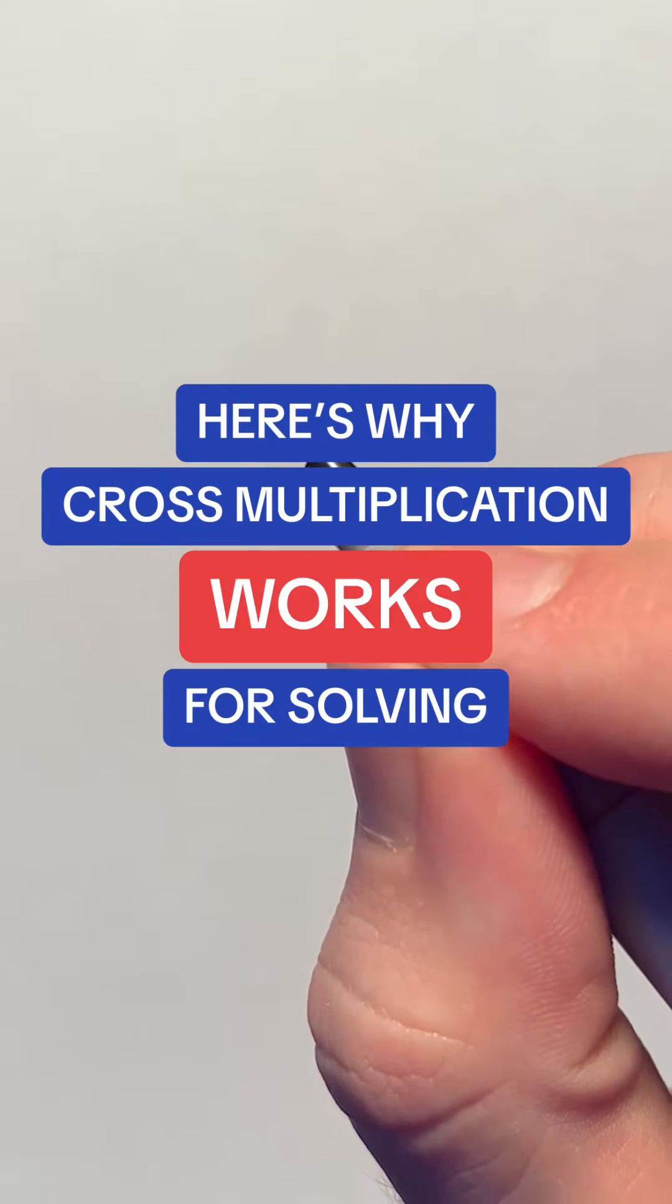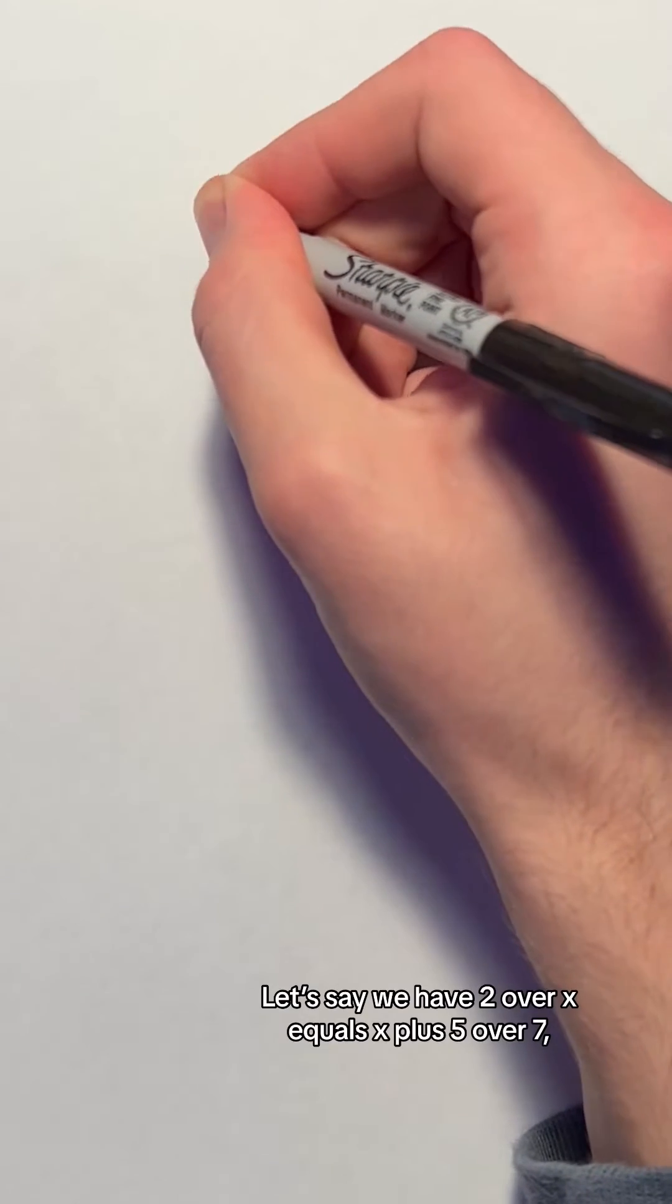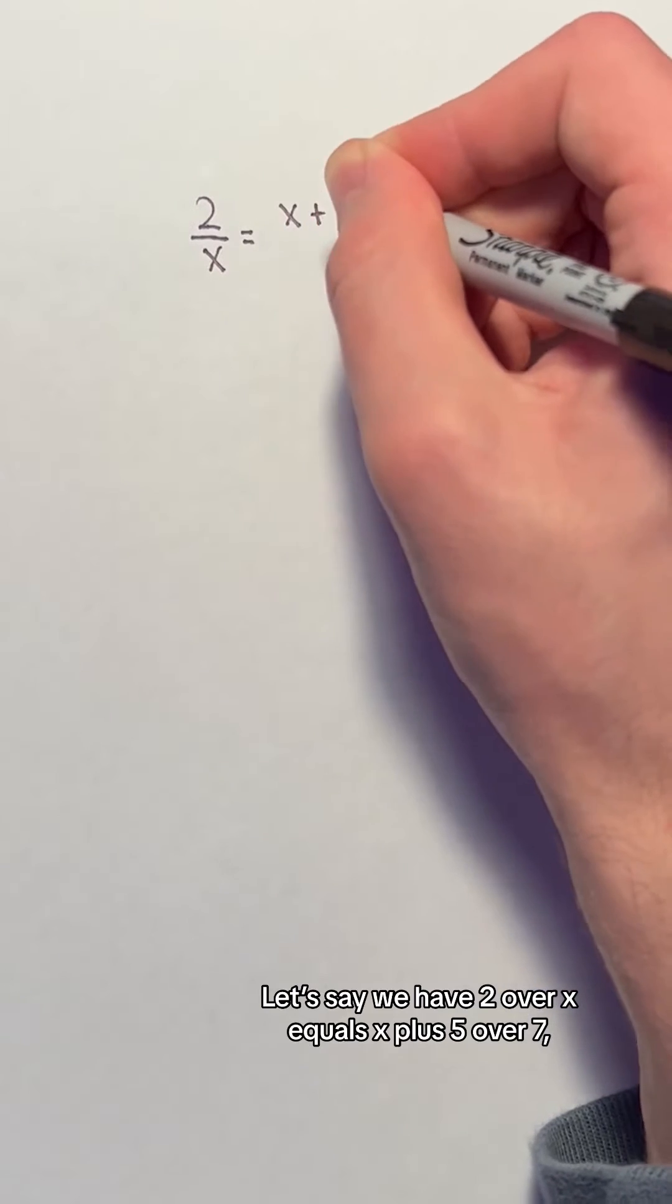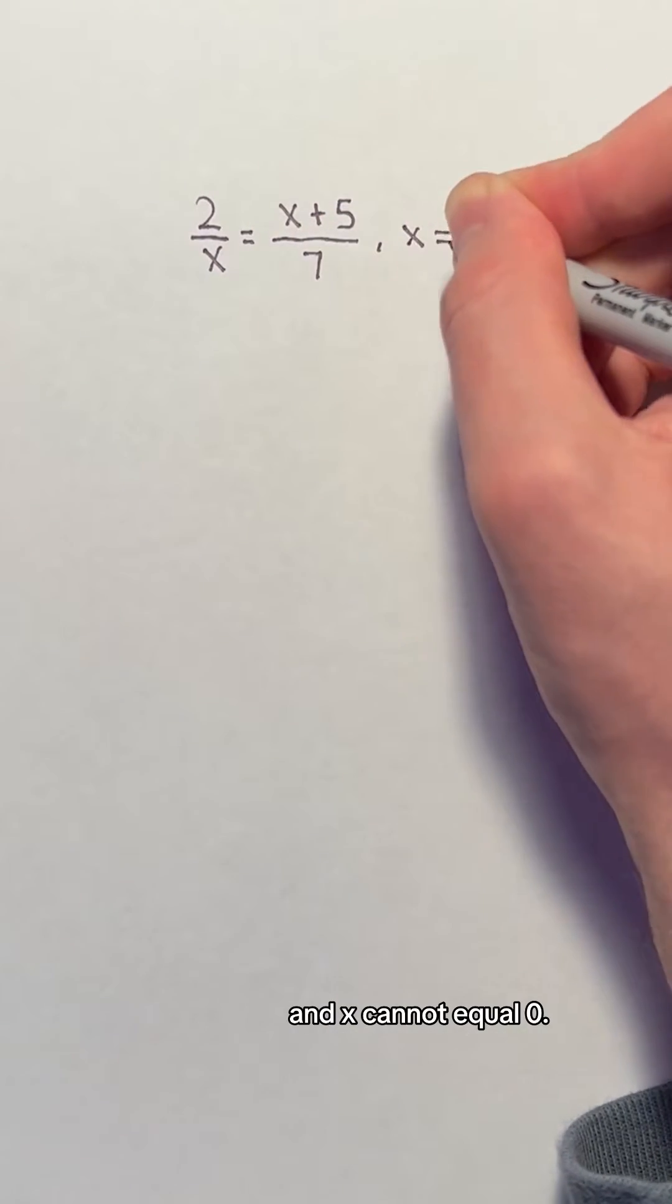Here's why cross multiplication works for solving proportions. Let's say we have 2 over x equals x plus 5 over 7, and x cannot equal 0.